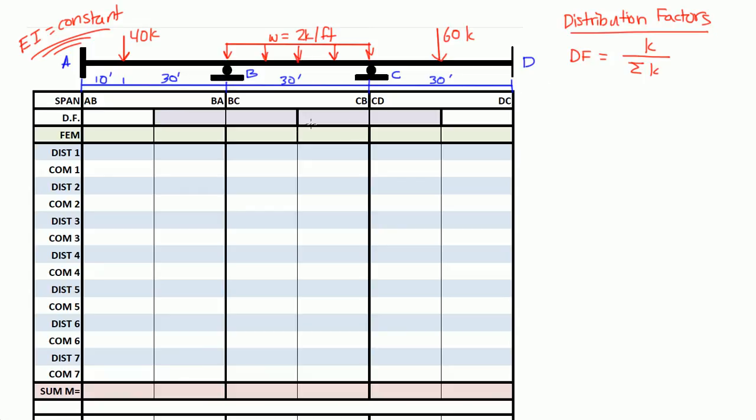So let's actually calculate the distribution factor for BA. And the k value for BA is I over L. And let's just write I over length. Length of BA is 40 feet, the 30 plus the 10. And then divided by I over L of BA, which is 40, plus the I over L of BC, which is 30.